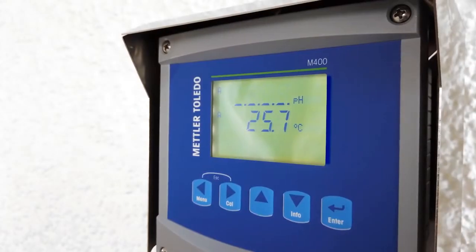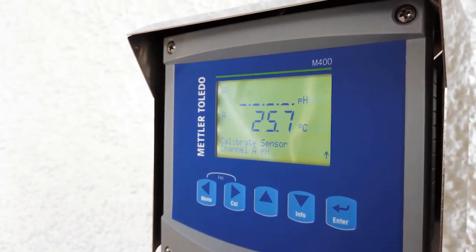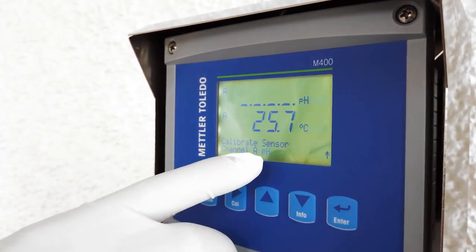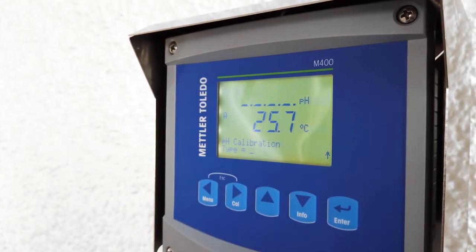On the transmitter, select the calibration menu by clicking on the calibration button. You will be required to pick the channel the sensor is connected to. Since this is a one-channel transmitter, you have only one channel, so select channel A.